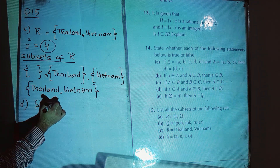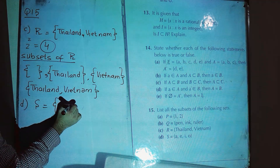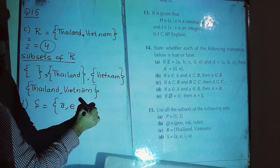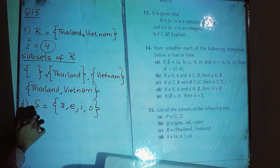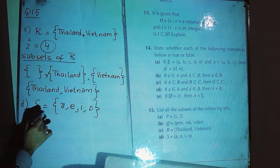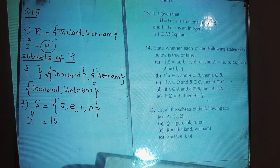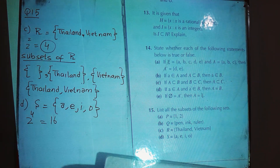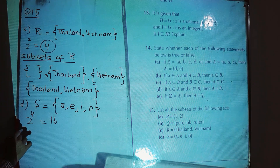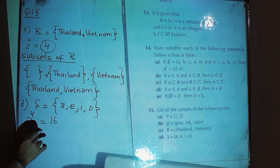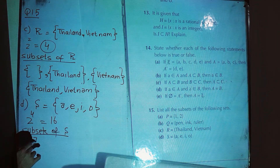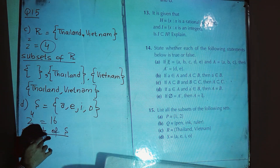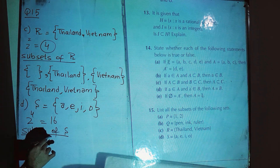Then we have part D where set S has elements {a, e, i, o}. How many subsets can this set have? Two raised to the power of the number of elements — one, two, three, four — that is sixteen. Starting now with the subsets of S: beginning from the empty set, then subsets with a single element.